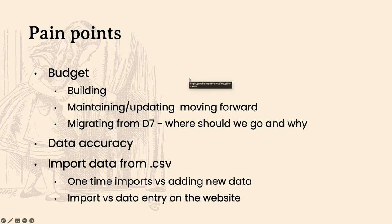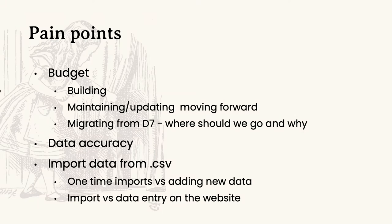There are pain points with any project. Researchers are usually not self-made billionaires — they're doing this to make the world a better place and often work with limited funding streams. One of the biggest issues is budget. A lot of people want a budget for the build, especially in research where folks are getting grants for specific projects. But we need to make sure there's also a budget for maintaining and updating the site moving forward. All the people who got grants and built amazing Drupal 7 sites are now running into the end-of-life problem where they don't have the funding to make a full upgrade.